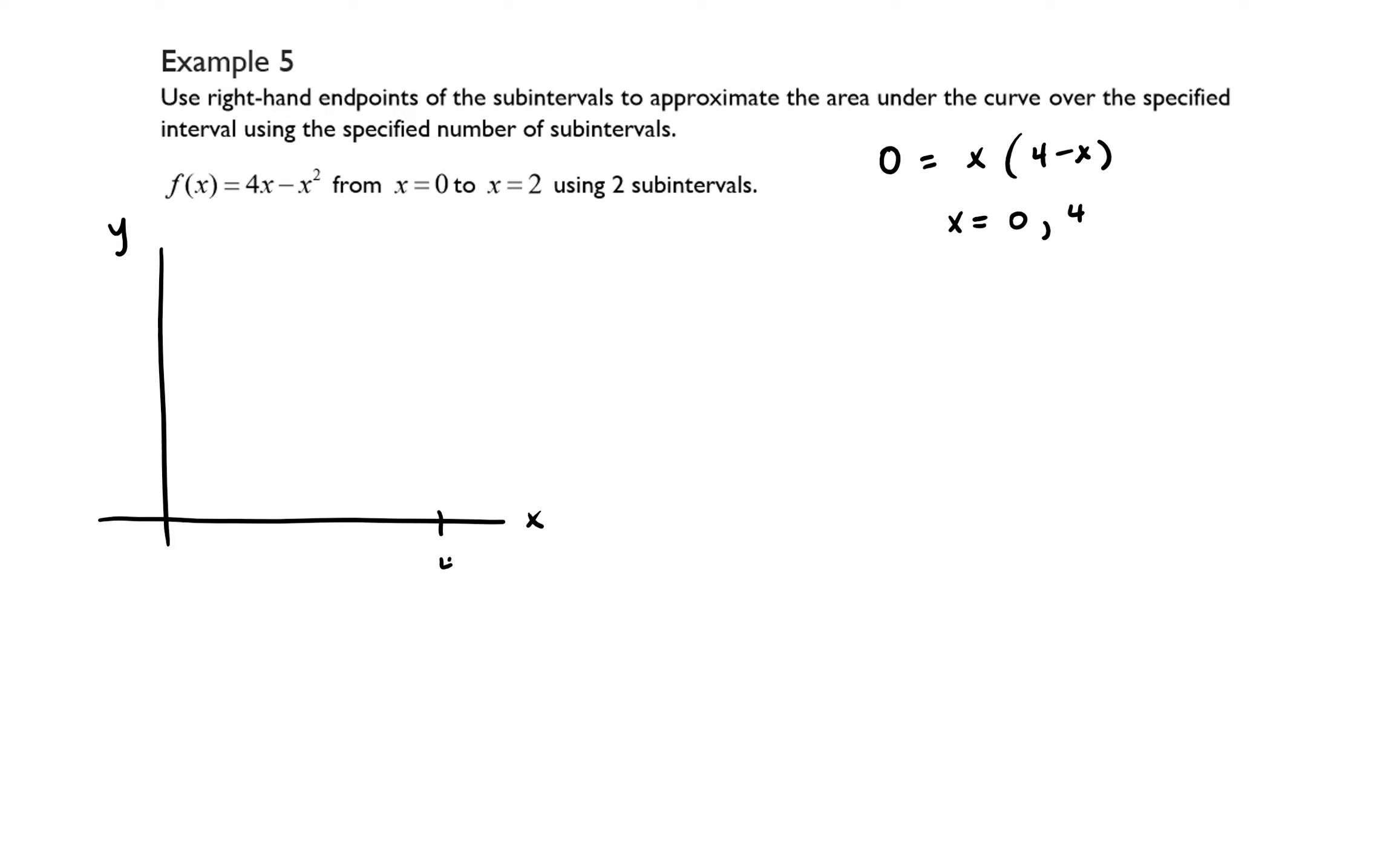So if this is 4, this is 2, our function is going to look something like this. Although after 2, we're not so concerned about since we only want to look from x equals 0 to x equals 2. So I just put a dashed curve there. So basically we are wanting to figure out the area under the curve in that shaded region, but I'll erase the shaded part.